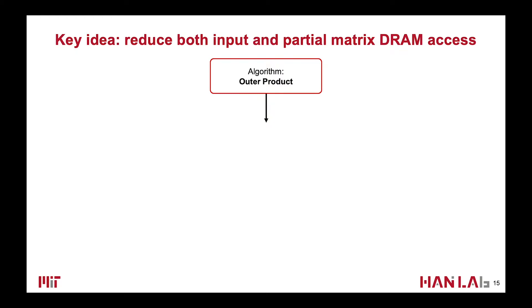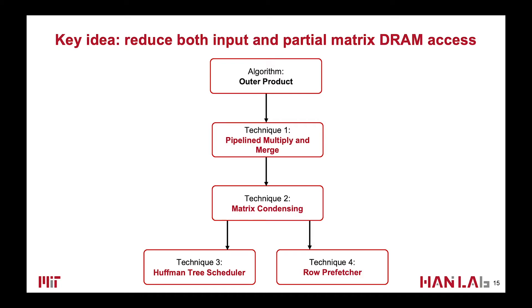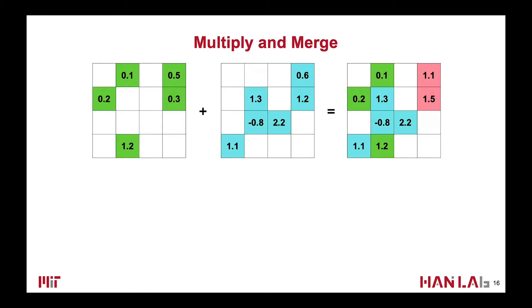Our main idea is to reduce both input and partial matrix DRAM accesses. To do this, we propose pipeline multiply and merge, matrix condensing, and a Huffman tree scheduler to reduce partial matrix DRAM accesses. We also propose row prefetch to reduce input matrix DRAM accesses. We will introduce them in detail.